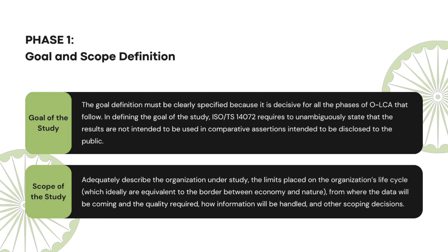The first step of an OLCA is to describe the goal of the study: why is an OLCA being conducted, what questions are we trying to answer, who will use the results, and what do we want to assess? The goal definition must be clearly specified because it is decisive for all the phases of OLCA that follow. ISO TS 14072 requires unambiguously stating that the results are not intended to be used in comparative assertions intended to be disclosed to the public. An OLCA could be undertaken to, for instance, identify impact reduction opportunities along the value chain, performance tracking over time, or improving knowledge, control, management, and transparency of operations involved in the portfolio provision.